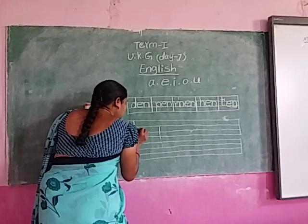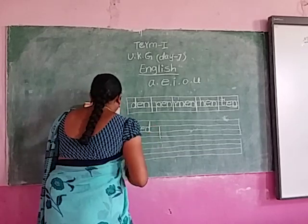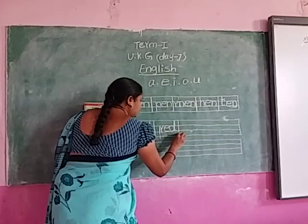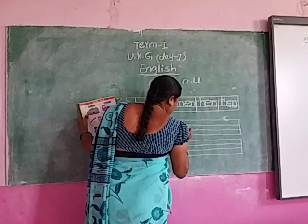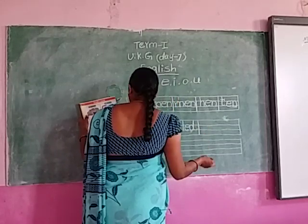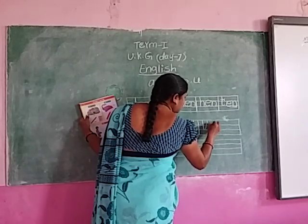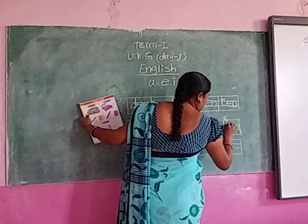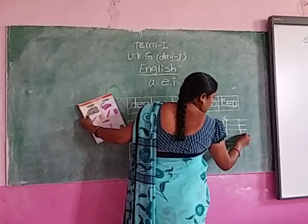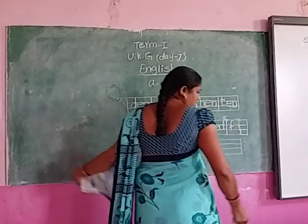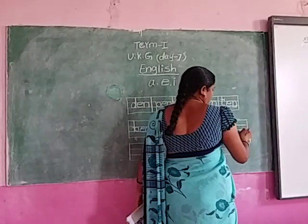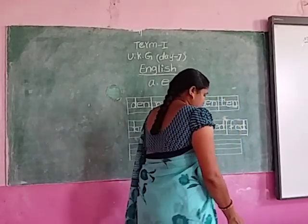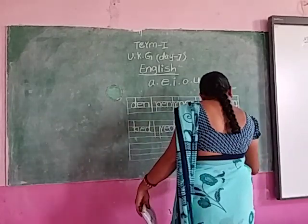Next, ED words. B, E, D — bed. R, E, D — red. L, E, D — led. W, E, D — wed.